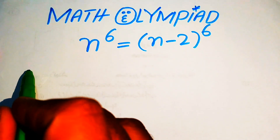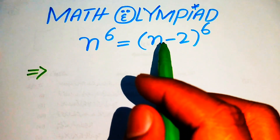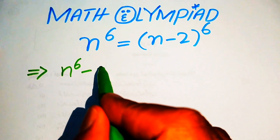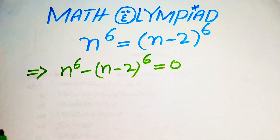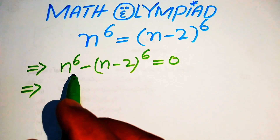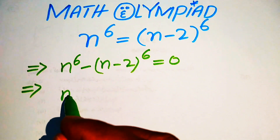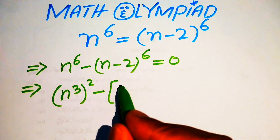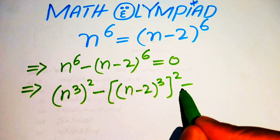The very first step is to rewrite this equation. We move the second term to the left hand side and write it as n to the power of 6 minus n minus 2 to the power of 6 equals to 0. We then write n to the power of 6 as n cubed squared, and n minus 2 to the power of 6 as n minus 2 cubed squared, so the equation becomes n cubed squared minus n minus 2 cubed squared equals to 0.